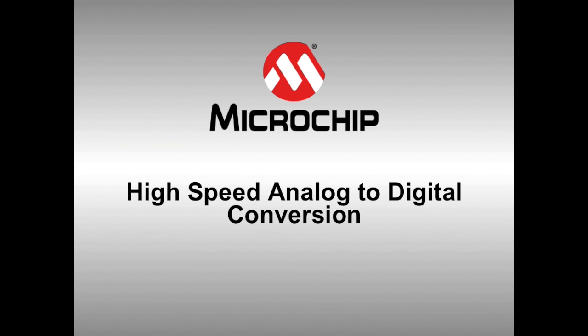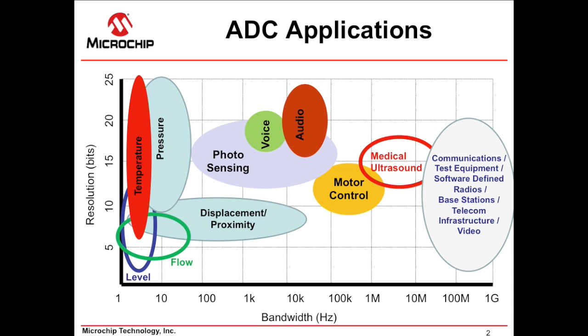Well, since today we're focusing on high-speed signal acquisition, the area of the chart here that we're looking at that we're going to focus on is over on the right in the really high-speed area. So, applications such as communications, test equipment, software-defined radios, etc. Those are the applications that are really driving high-speed signal acquisition. Obviously, there's a lot of other applications out there that require analog to digital conversion, but these are the ones that are driving the high-speed acquisition. So, what are some of the things we need to think about in the analog to digital part of these high-speed applications?